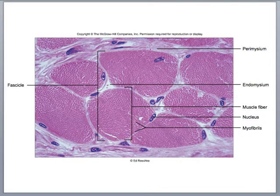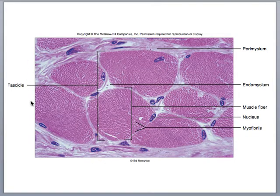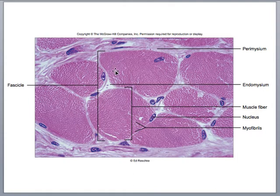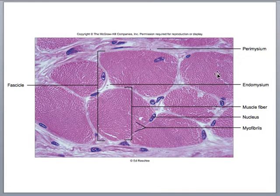This histology slide shows a fascicle — a bundle of skeletal muscle cells — and the connective tissue perimysium that surrounds the fascicle. Each one of these is an individual skeletal muscle cell. The nuclei are pushed to the periphery, and surrounding an individual skeletal muscle cell is the endomysium.